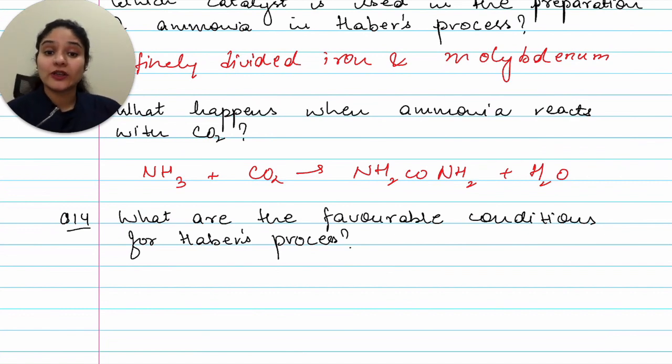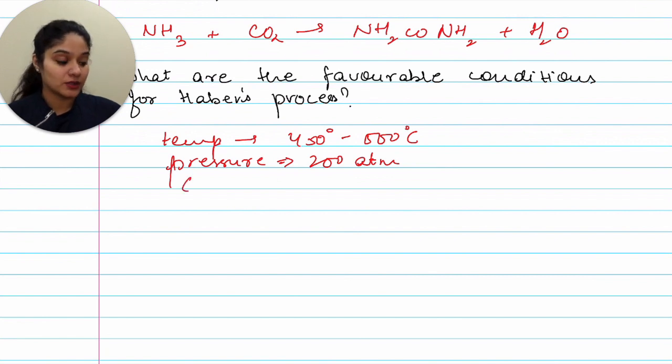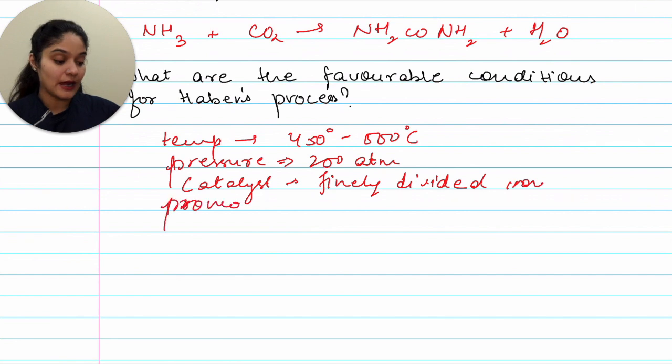What are the favorable conditions for Haber's process? Very important question. So temperature would be about 450 degree Celsius to 500 degree Celsius. Pressure would be 200 atmospheres. Then the catalyst would be finely divided iron and promoter would be Al2O3. So these would be favorable conditions for Haber's process.